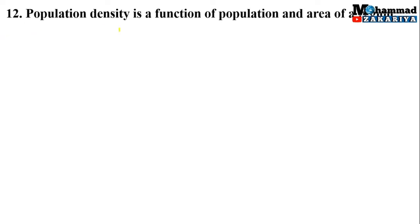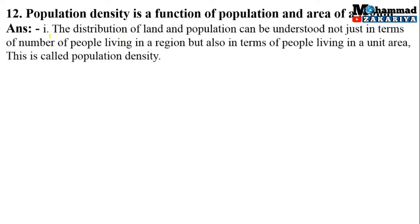Geographical reason number 12: Population density is a function of population and area of a region. Point number 1: The distribution of land and population can be understood not just in terms of numbers of people living in a region, but also in terms of people living in a unit area. This is called population density.